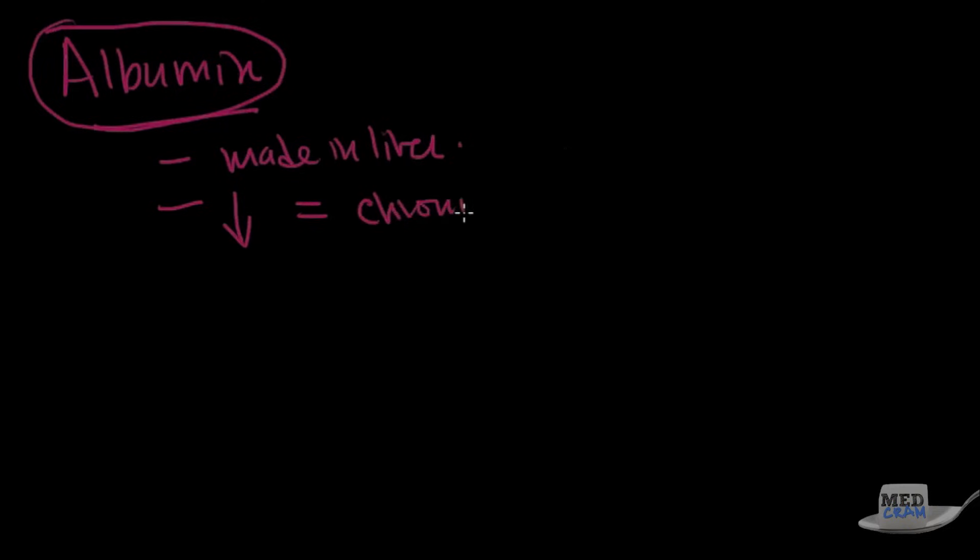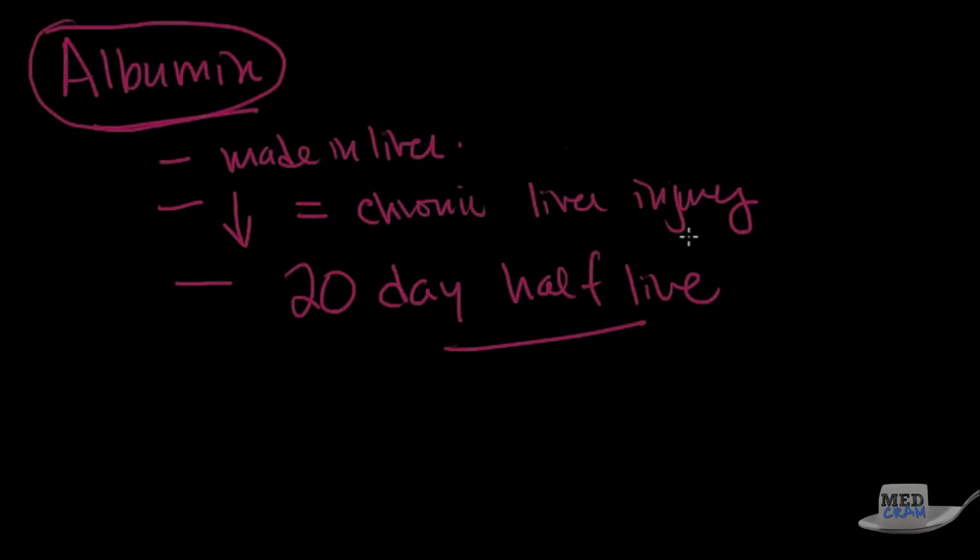So if the albumin is low, that usually equals chronic liver injury. So if someone has an acute problem with the liver, their albumins usually stay up. And the reason why that is the case is because it's got about a 20-day half-life. Which means it takes a long time for the albumin levels to start to go. So I would say this is a good marker for chronic liver disease.